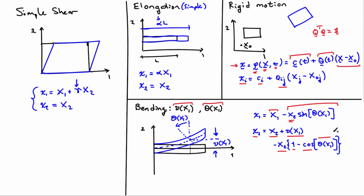So this is a significantly more complex deformation than the simple shear, elongation, or rigid motion, but it's one that's familiar to a lot of people. And this deformation here as I described it is sometimes known as the Timoshenko kinematics.